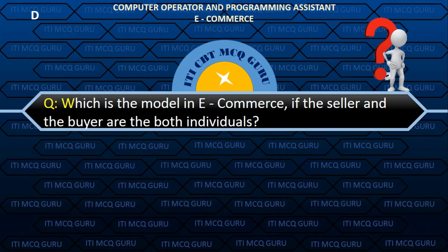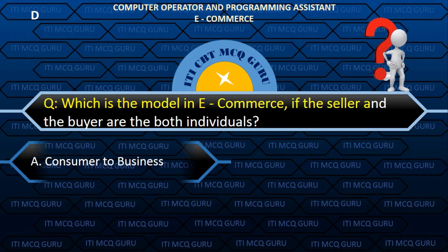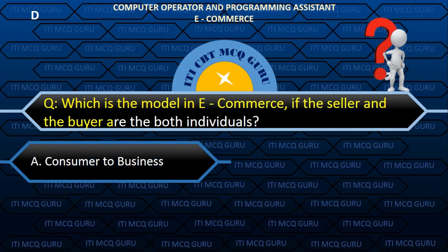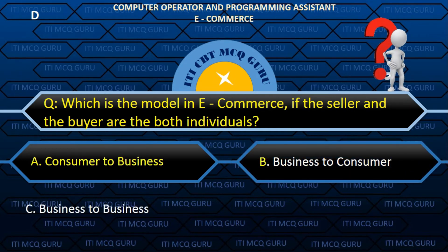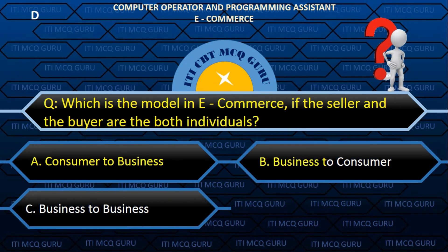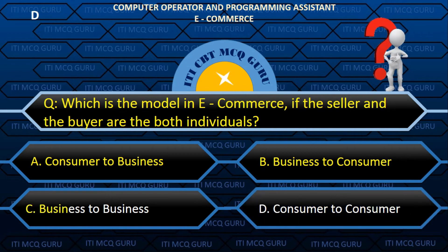Which is the model in e-commerce if the seller and the buyer are both individuals? D. Consumer to consumer.